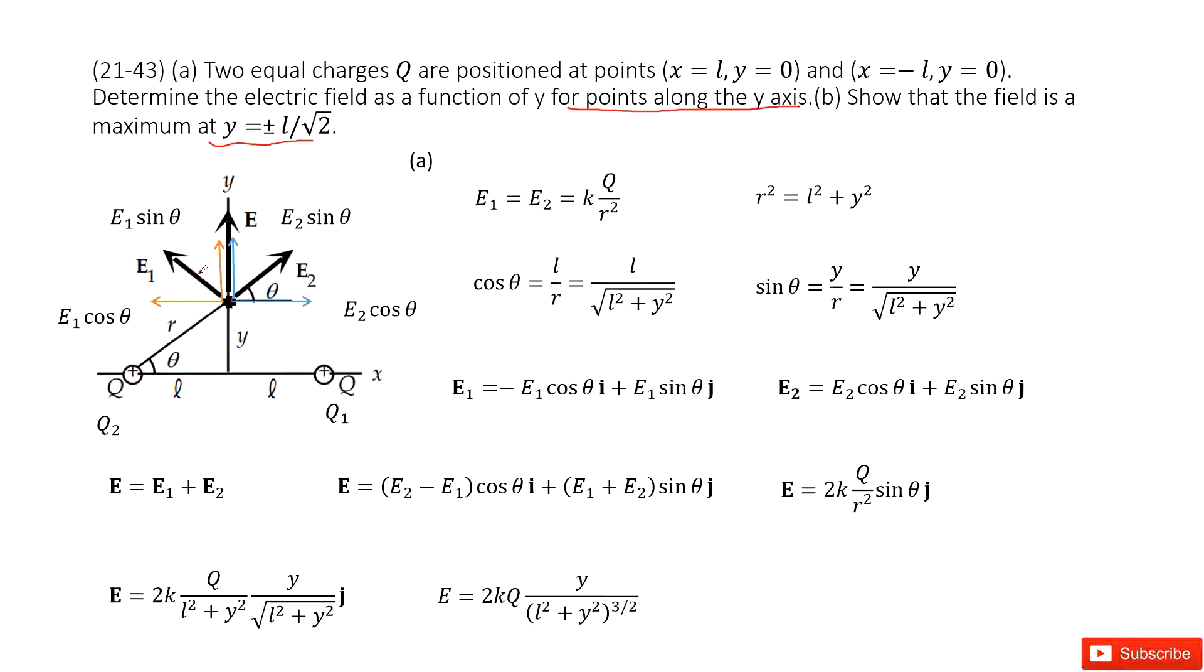We need to add these two vectors together. That means we need to project E1 and E2 into x-component and y-component. We call this angle theta. For E2, we project in x-component to get E2 cos theta, and in y-component to get E2 sin theta. Similarly, E1 projected in x-component is E1 cos theta, and in y-component is E1 sin theta.